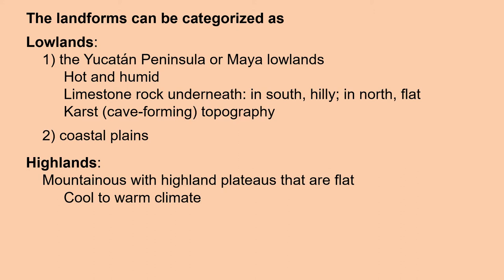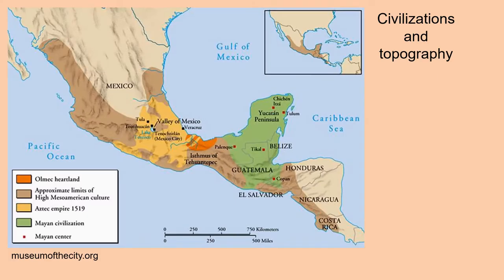The landforms in this area may be categorized as lowlands or highlands. The highlands are mountainous with highland plateaus that are flat, such as around Mexico City, and have a cool to warm climate. The lowlands include the coastal plains as well as the Yucatan Peninsula, which is hot and humid. It is hilly in the south and flat in the north. We see limestone rock underneath, creating a karst or cave-forming topography, often lacking surface water.